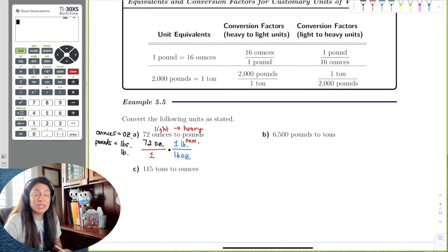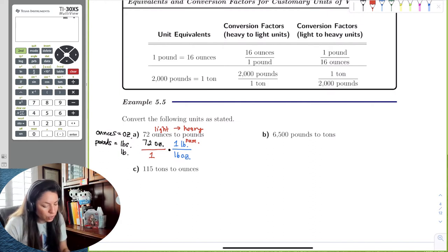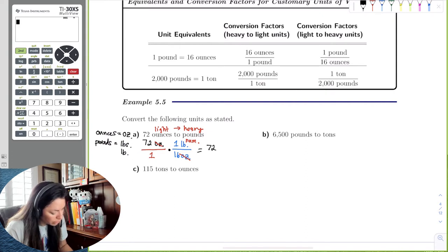LB is one pound. So notice I just put LB there. P is already taken, so if you're going to use pounds, you got to use LB or LBS. And then now we can see that ounces can reduce out, and we're left with 72 times 1, which is 72, divided by 1 times 16, which is 16 pounds.